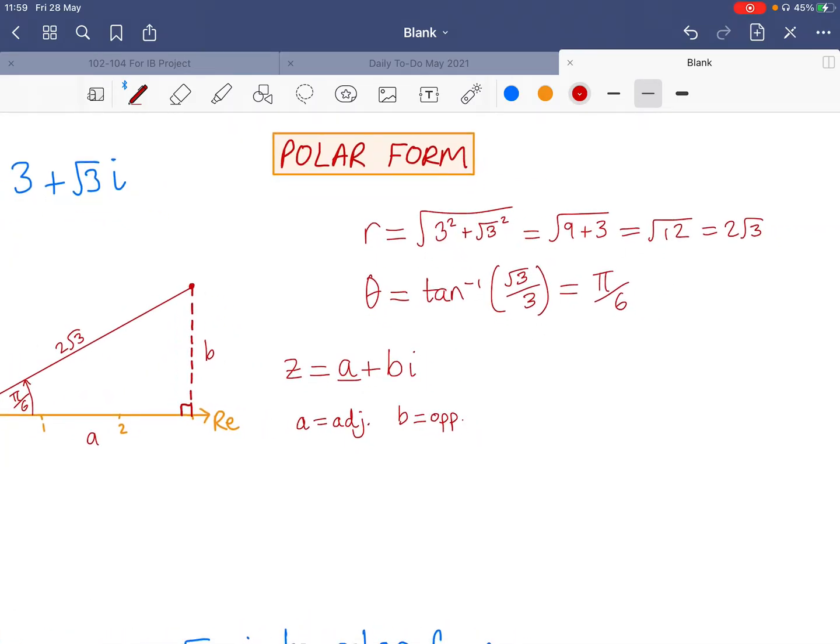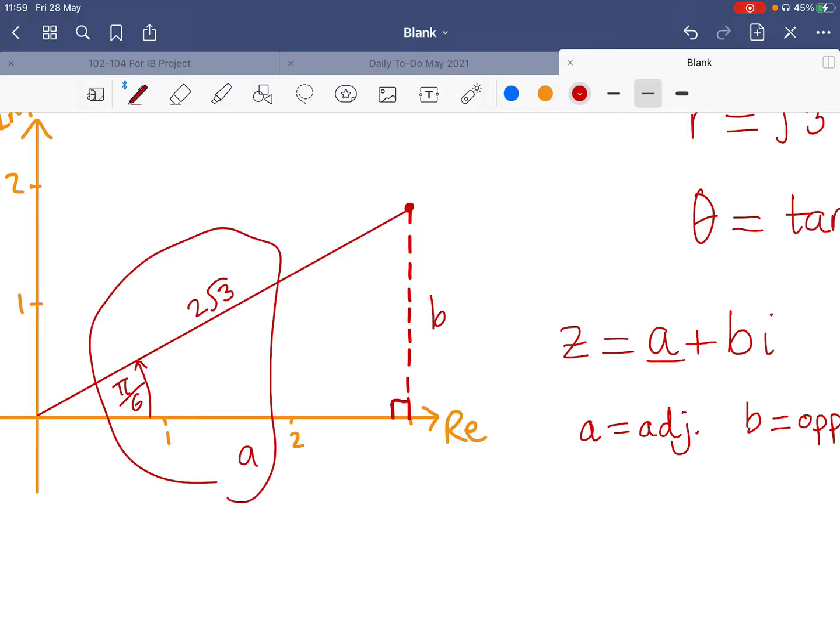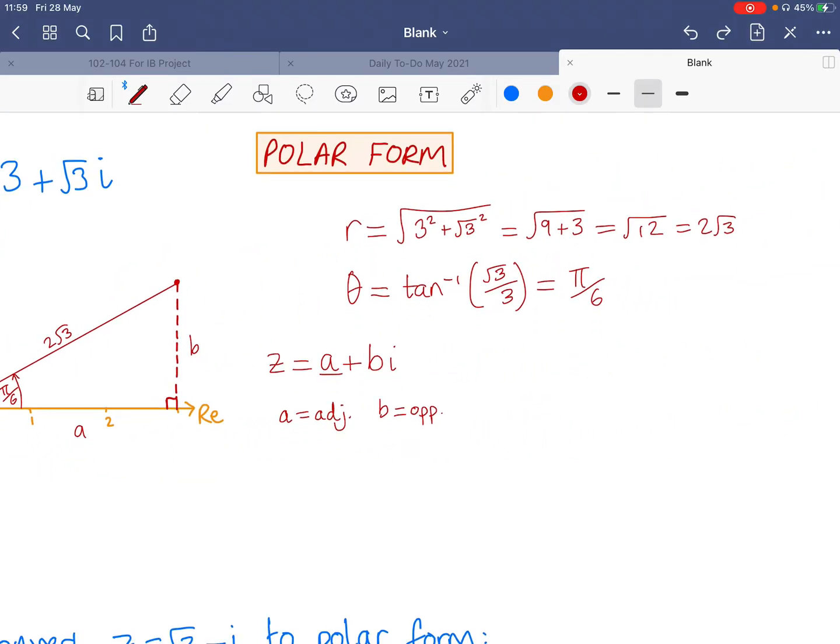So is there another way of writing a and b? Well, you can easily relate a to our modulus and argument there, by saying that we have adjacent and a hypotenuse. Therefore, we can say that cosine of pi over 6 equals a over 2 root 3, and that would mean that a equals 2 root 3 cos of pi over 6. Similarly, sine of pi over 6, as sine is opposite over hypotenuse, would equal b over 2 root 3. And hence, b equals 2 root 3 sine pi over 6.